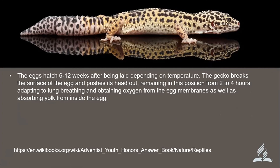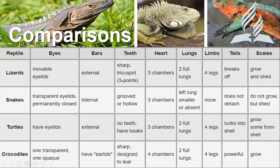There's also a comparison requirement: compare lizards, snakes, turtles, and crocodiles based on eyes, ears, teeth, heart, lungs, limbs, tails, and scales. A broad comparison table is presented here. You can review back this section of the video to complete the comparison section of your honor. Each reptile group has diverse characteristics across all these aspects of reptile anatomy.